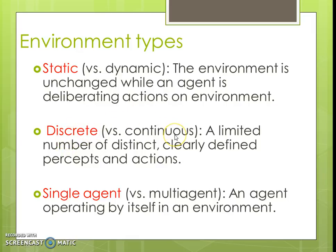The next type is discrete versus continuous. If the environment has a limited number of distinct, clearly defined percepts and actions, it will be a discrete environment, otherwise it will be continuous. Tic-Tac-Toe or chess has a limited number of unique percepts and actions — the number of states and actions may be high, but they are finite, so these fall in the category of discrete environments. On the contrary, a taxi driver agent experiences an infinite number of unique percepts even on the same road because of other factors, making it a continuous environment.